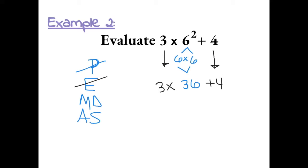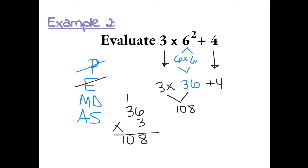Now we can do multiplication or division. We multiply 3 times 36, which gives us 108. Now we can bring everything else down. We have no more multiplication or division, so now we can do addition or subtraction. This gives us 112.